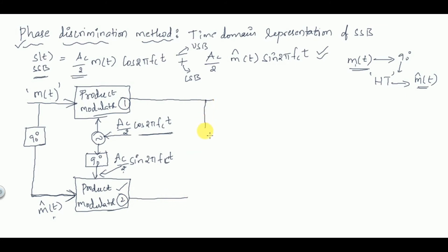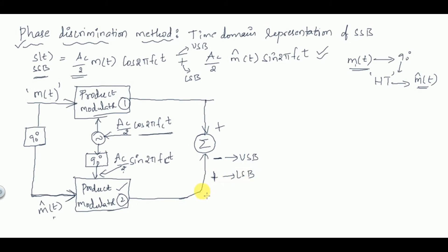The outputs of the two product modulators are brought together and given to a summer circuit. If you subtract the outputs (minus), you get USB as the output. If you add the outputs (plus), you get LSB as the output.